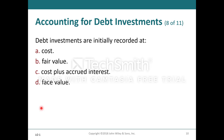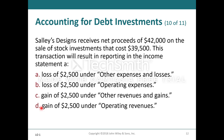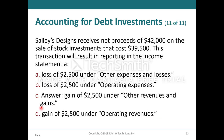Debt investments are initially recorded at cost, just like with bonds. So Sally's Designs received net proceeds of $42,000 on the sale of stock investments that cost $39,500. This transaction results in reporting in the income statement: A) a loss of $2,500 under other expenses or losses, B) a loss of $2,500 under operating expenses, C) a gain of $2,500 under other revenue and gains, or D) a gain of $2,500 under operating revenues. The answer is C — a gain of $2,500 under other revenue and gains.